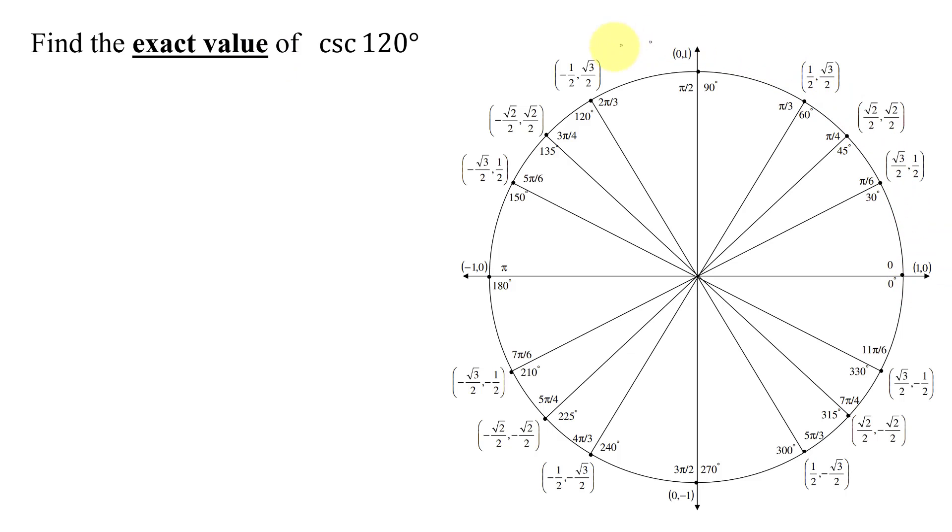We need to use the unit circle that's shown over here. And remember, for every point on the unit circle, the x-coordinate represents the cosine of that angle. The y-coordinate represents the sine of that angle.